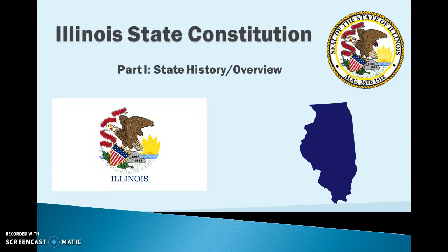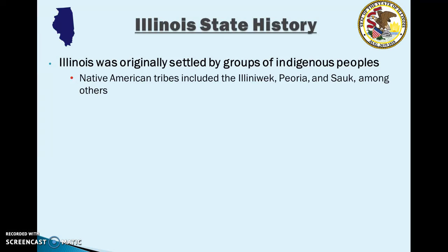Illinois was originally settled by groups of indigenous peoples — Native American tribes. There were a large number of Native American tribes who settled throughout Illinois. Some examples include the Illiniwak, Peoria, and Sauk tribes, but there were many, many other groups of Native Americans who settled in Illinois early on.